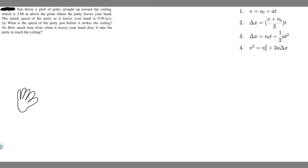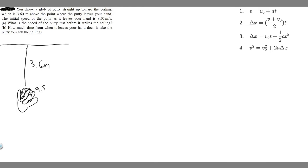So this is going to be our hand. We've got this putty, and we're going to throw it up. We know that the ceiling is going to be 3.6 meters above where we throw it — from our hand to the ceiling, this will be our ceiling. And we know this is going to be 3.6 meters high. And we also know that when we throw this putty, right when it leaves our hand, it's going to be going 9.5 meters per second.